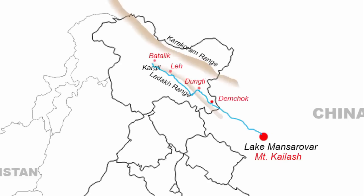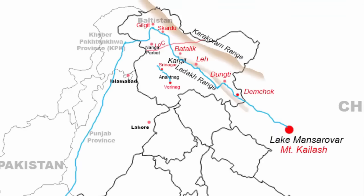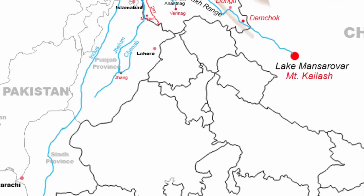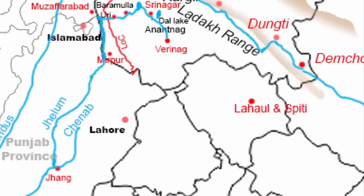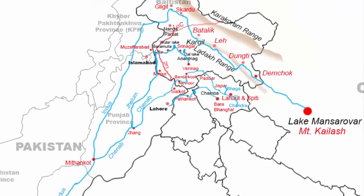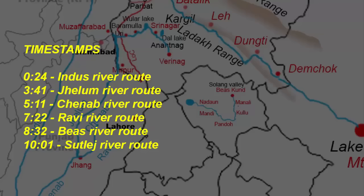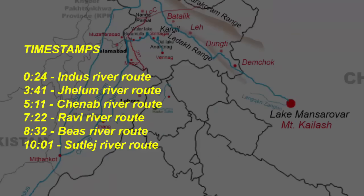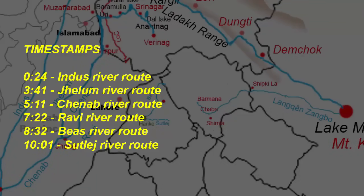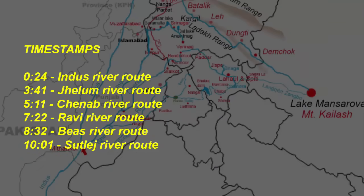In this video, we are going to learn about the Indus River and its tributaries. I am going to show you the exact place of their origin, to the place where they drain, and also a few important places where the rivers pass by. Timestamps are available in the description if you want to skip over and save some time.